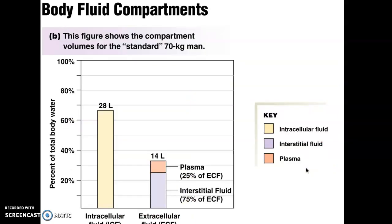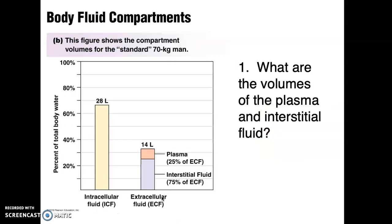This figure shows approximate volumes for about a 70-kilogram male. In the form of a bar graph, it's easier to visualize how you have approximately 28 liters of fluid inside the cell and approximately 14 liters on the outside of the cell, of which most is interstitial. I'm going to skip the calculation slide, but given 28 liters in one compartment and 14 in the other with percentages of 25% and 75%, you should be able to calculate the volume of plasma and the volume of interstitial fluid.